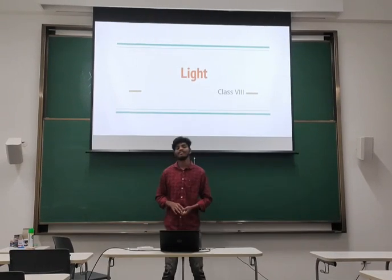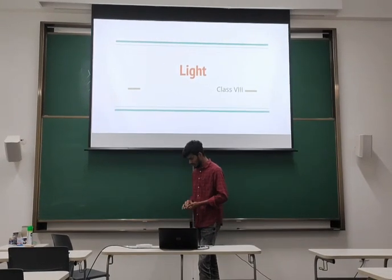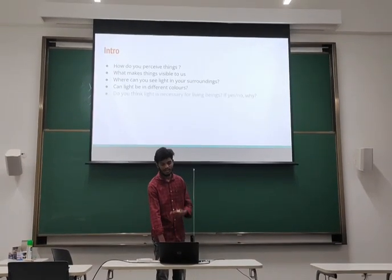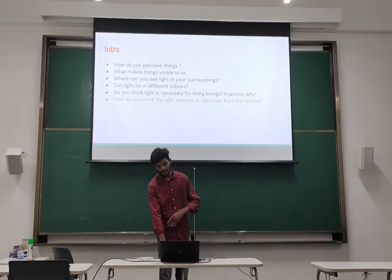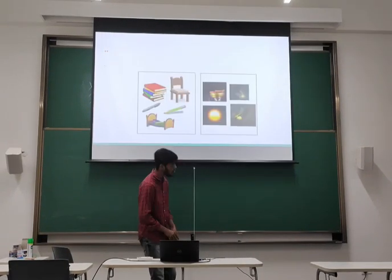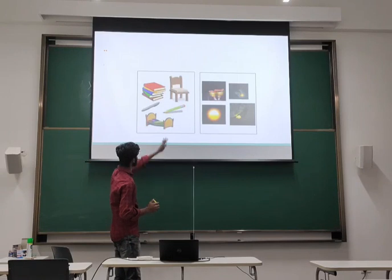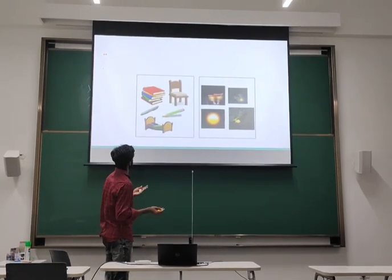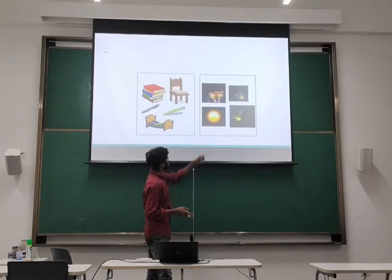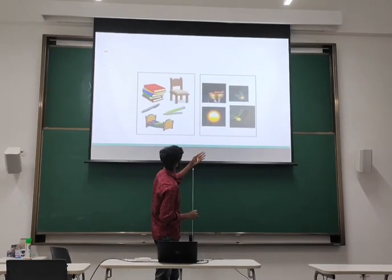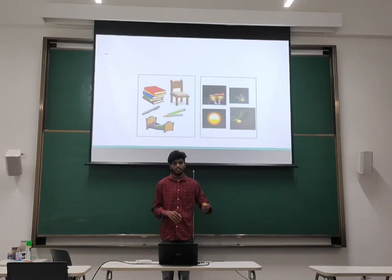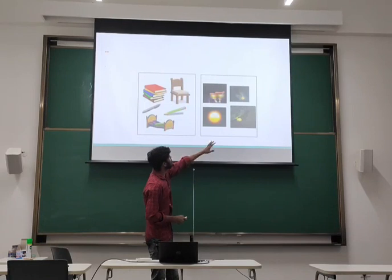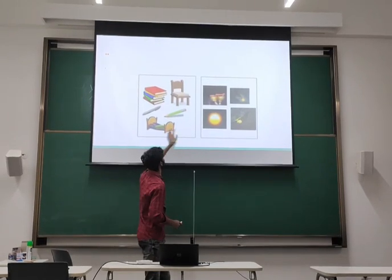So let me discuss some properties of Light. Just to test your prior experience about Light, observe these two groups of pictures. One group has a book, table, pencil, and other such objects. The other group has a bulb, sun, and other glowing objects. The one common difference we can observe is: these are called luminous and these are non-luminous.